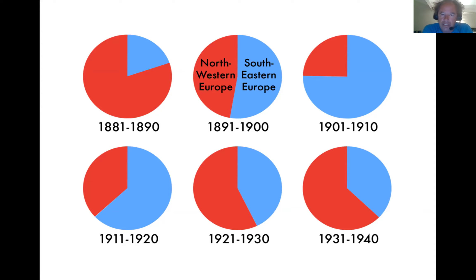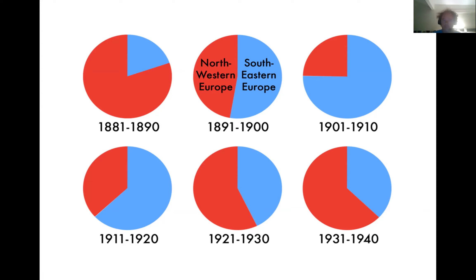Two pieces of legislation: one passed in 1921 on a temporary basis, and a second passed in 1924 — the Immigration Act — which establishes an outright quota system and critically uses the census of 1890 to determine shares, just before the wave of immigration from Southern and Eastern Europe. The sense was that Southern and East European immigrants were alien, anti-American, and didn't accept American ideals. It's true that there is a kind of radical surge on the far left in the 1900s and 19-teens that includes disproportionate numbers of immigrants.